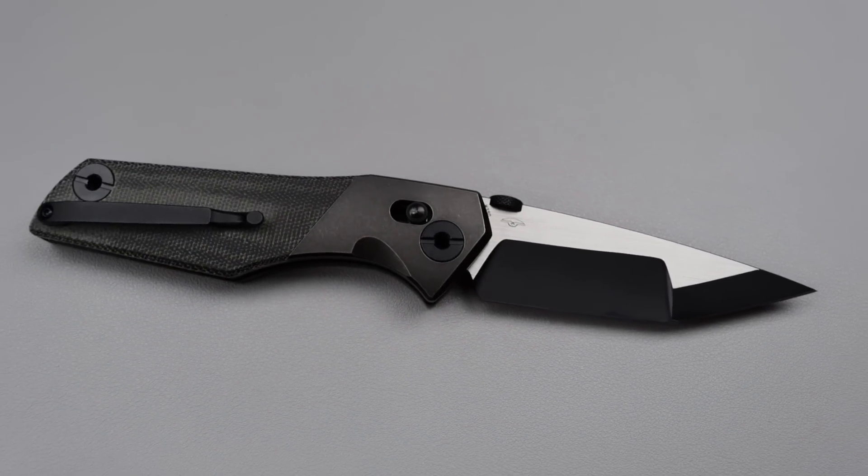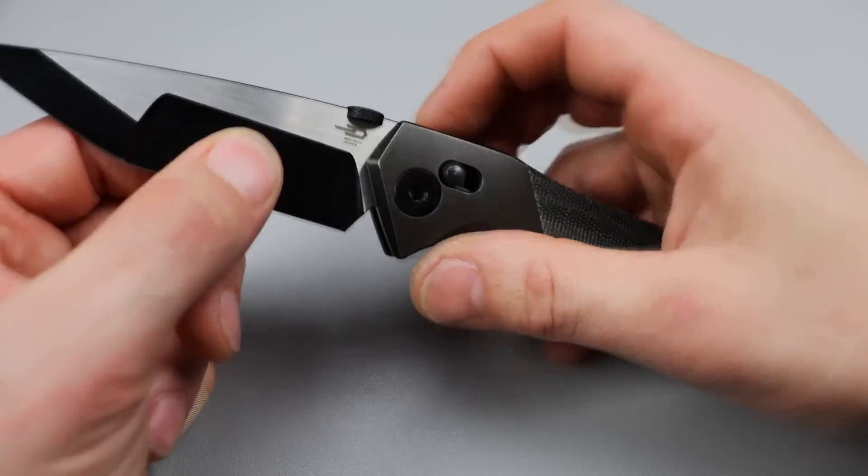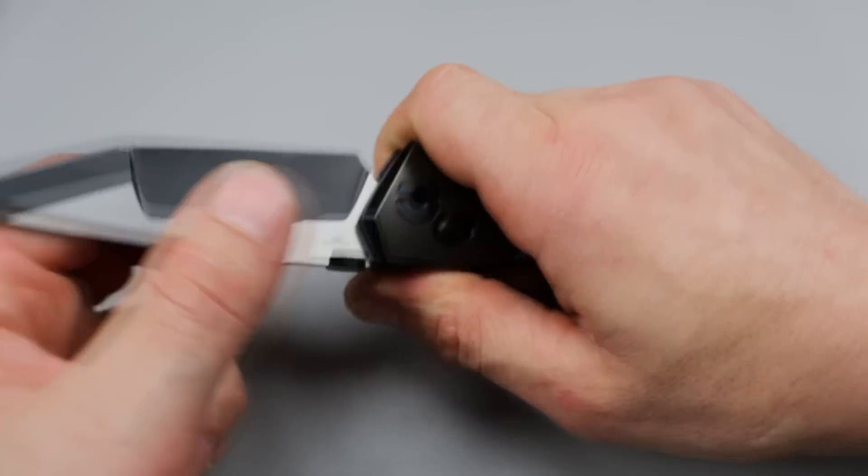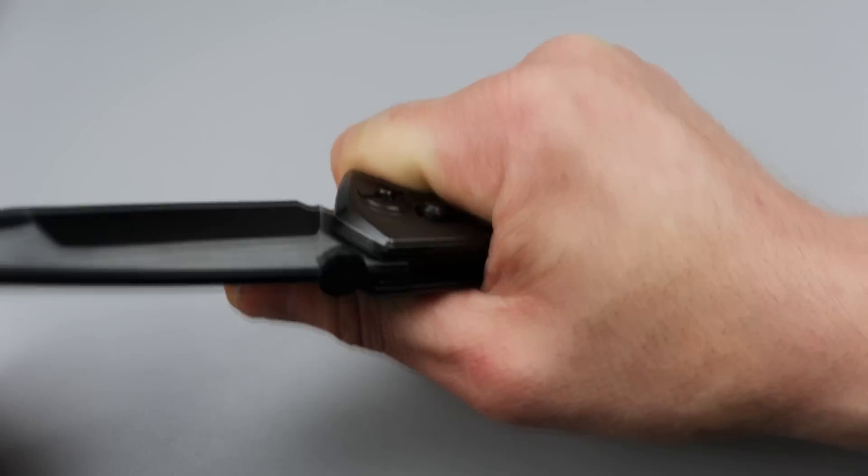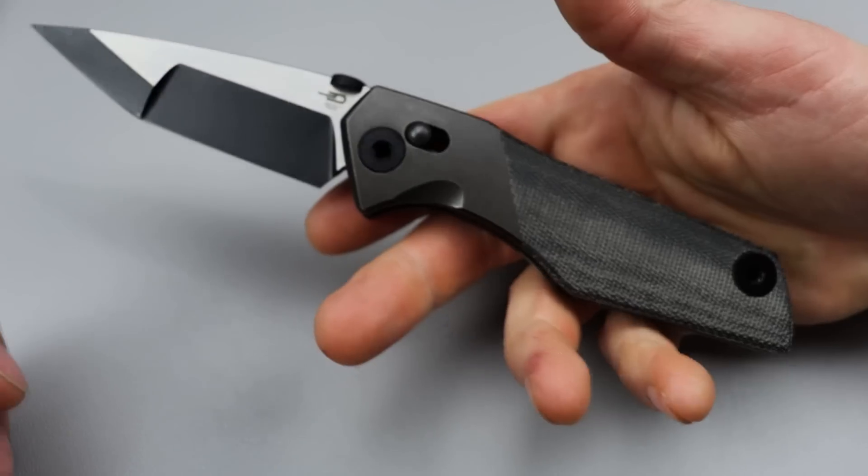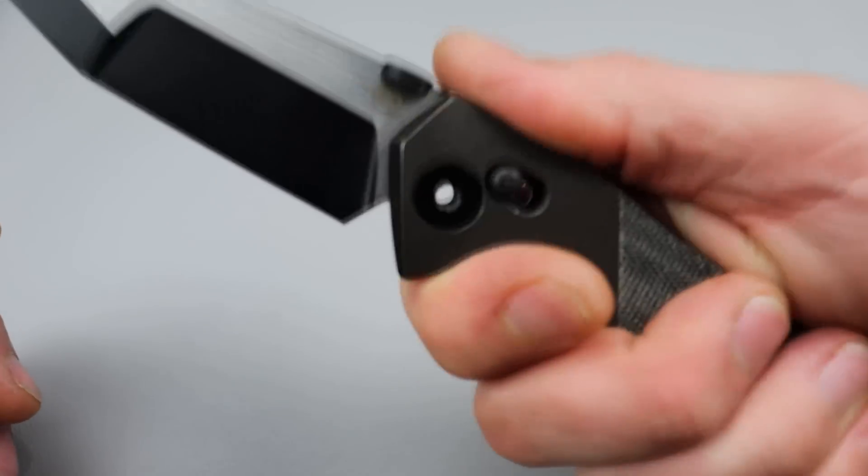So, this is a Tonto that you can use just like a drop point. And this hollow grind is going to trap materials in it almost like a recurve. The handle, extremely, extremely ergonomic. This is a great user. I can't express that enough. Fantastic user.